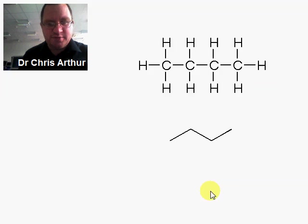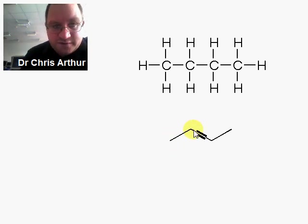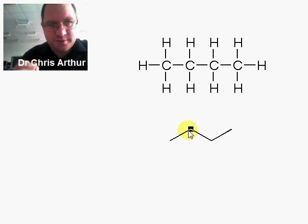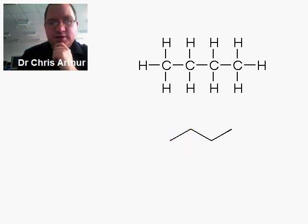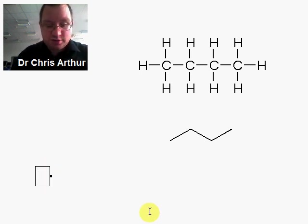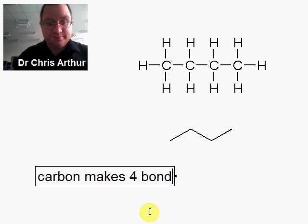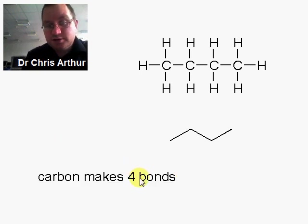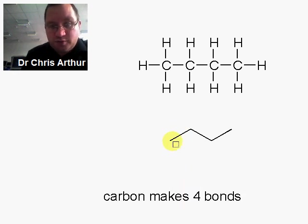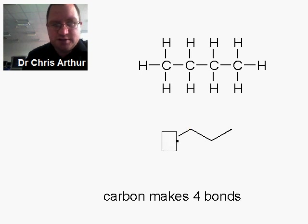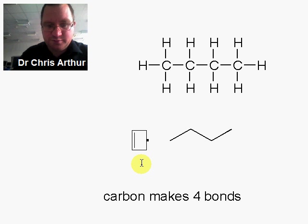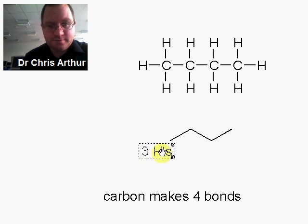At every inflection point in the zigzag — every time we bend a chain — we have a carbon atom. Chemists know that carbon makes four bonds. Looking at this drawing, if we look at this carbon atom here and we've only drawn one bond to it, that means we have three bonds that aren't shown, and on those three bonds we have three hydrogens.